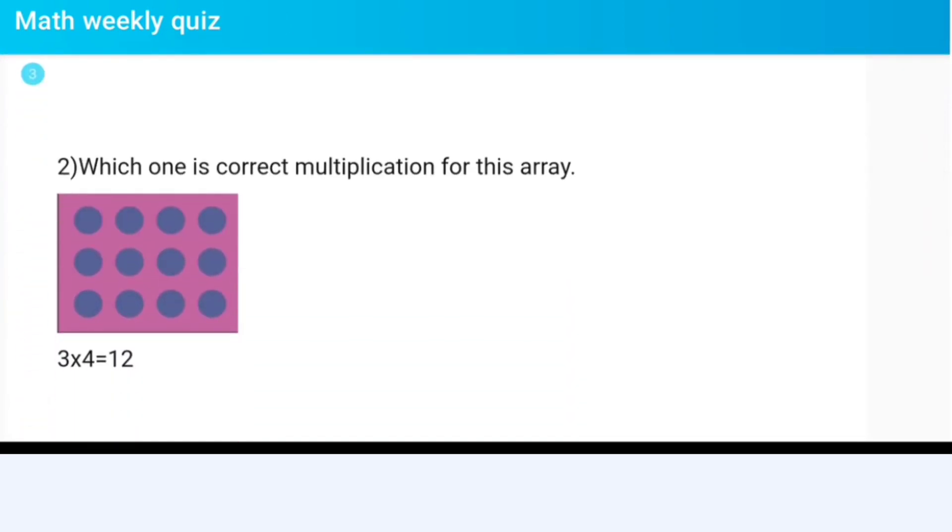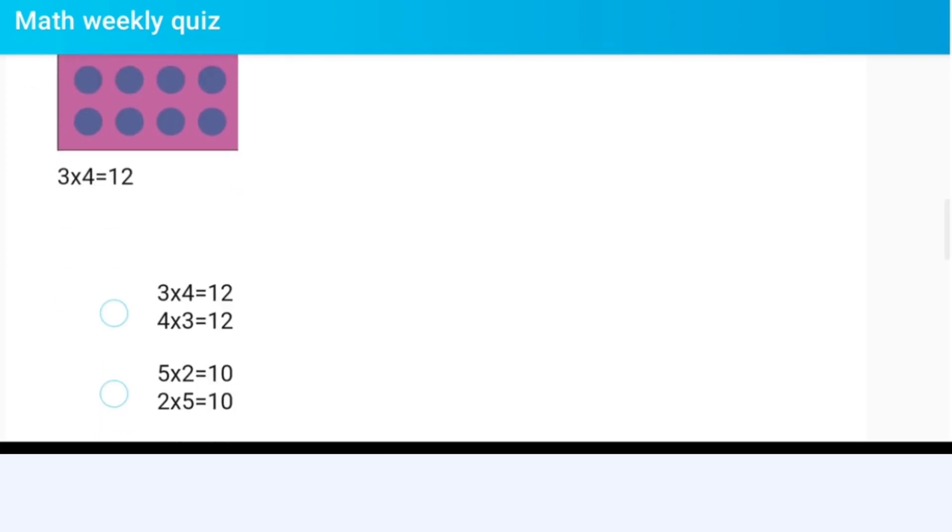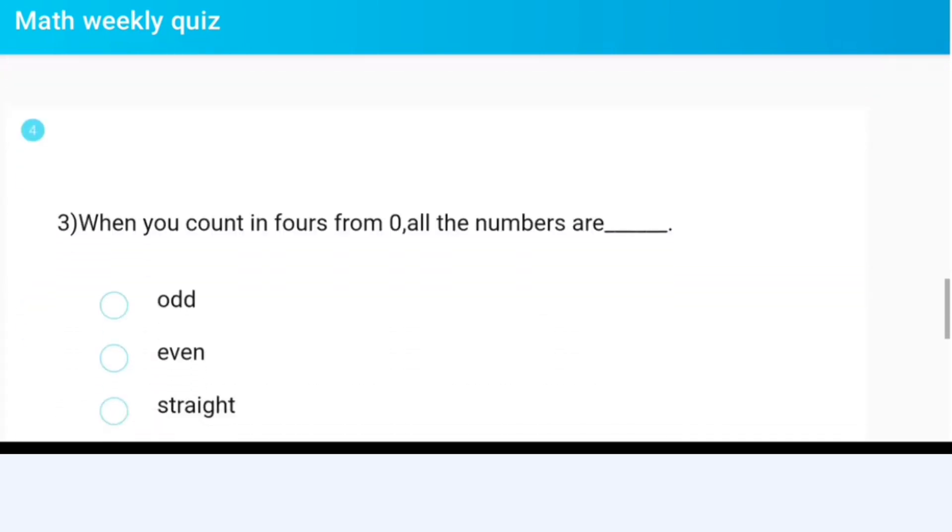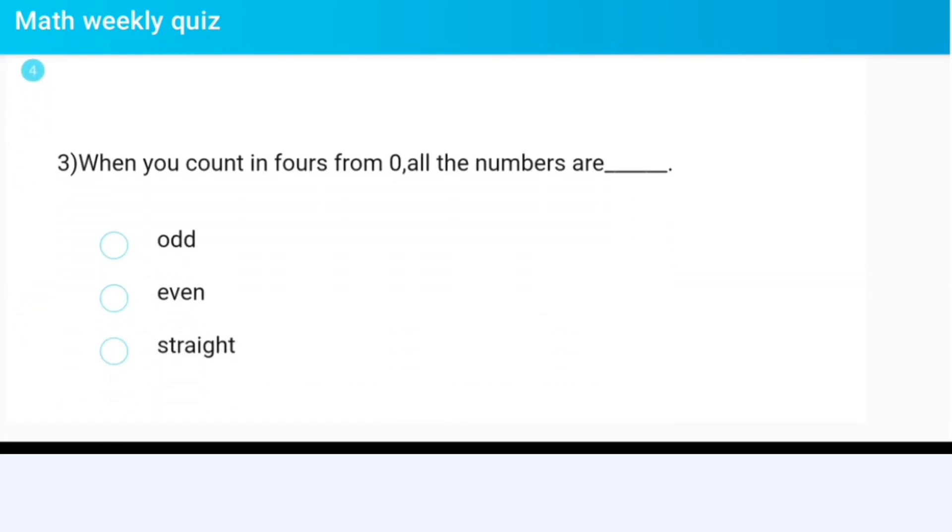Which one is the correct multiplication for this array? When you count in 4s from 0, all the numbers are dash. 4 multiply 7 equals?